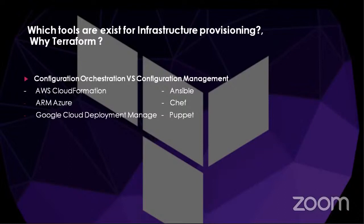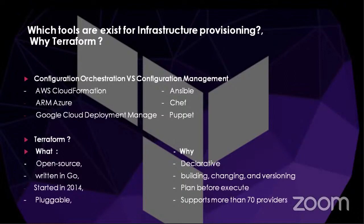When it comes to configuration orchestration — deploying your whole infrastructure or a complete CI/CD pipeline over the cloud — you use tools like AWS CloudFormation, Azure ARM, or Google Cloud Deployment Manager. These are tools tied to particular public clouds, so you can deploy applications using them. But that's where Terraform's advantage comes in over cloud-specific tools.